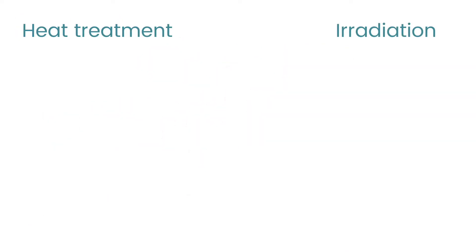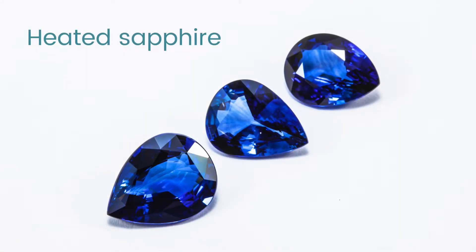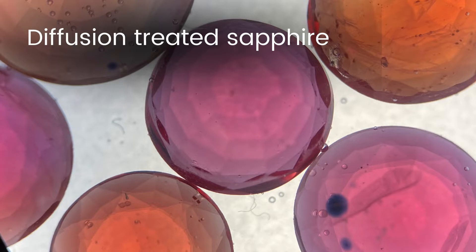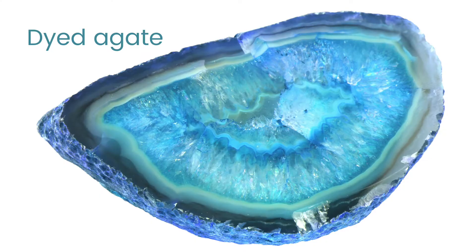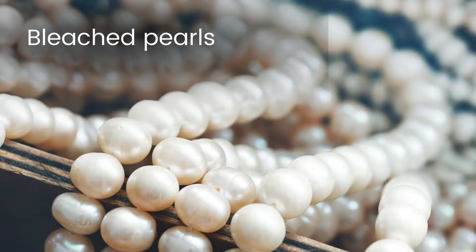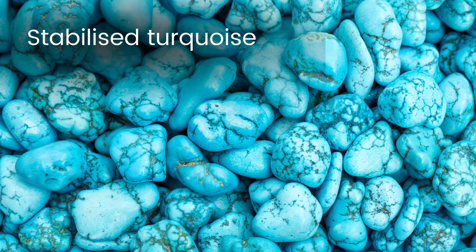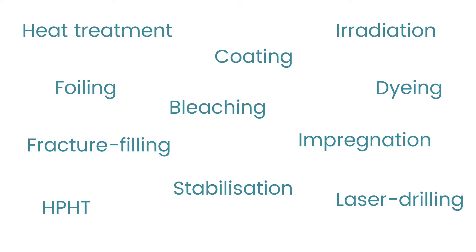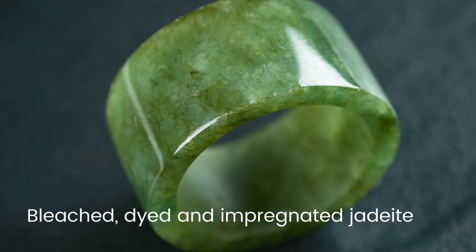There are many different types of treatments. Some are routinely performed on certain types of gems, however some are much more uncommon. Examples of treatments include heat treatment, diffusion treatment, coating, dyeing, fracture and fissure filling, bleaching, stabilisation, along with many others. Multiple treatments can also be applied to one gem.